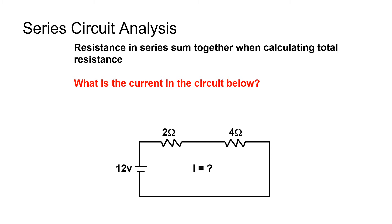Resistances in series sum together when calculating total resistance. Resistors are considered to be in series when there are no junctions or branches between them; the same current will flow through each resistor in series. What is the current in the circuit? Since the resistors are in series, total resistance equals 2 ohms plus 4 ohms, or 6 ohms. Current flow equals 12 volts divided by 6 ohms, or 2 amps.